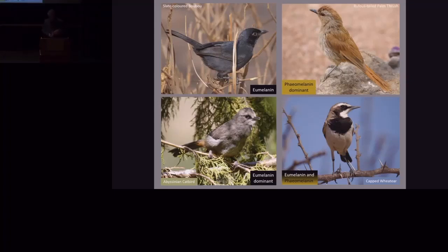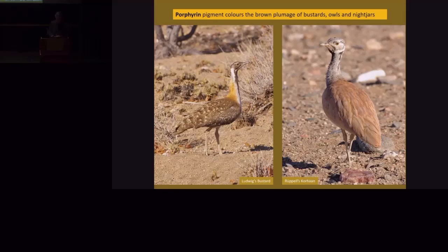So you might think that all brownish birds or greyish birds are colored by, in the brown case, pheomelanin. But you'd be wrong, because bustards, owls and nightjars have their own unique pigment, which is porphyrin. Luckily, these aren't squashed on a fence, but these are two bustards found in Crockerland in northwestern Namibia.